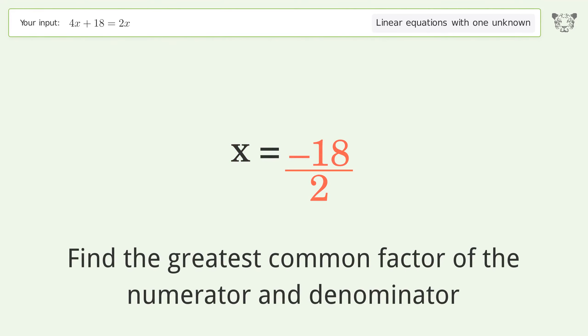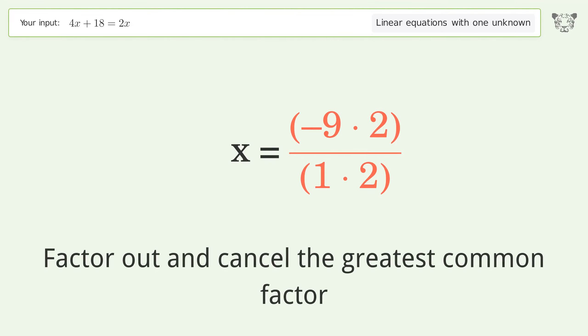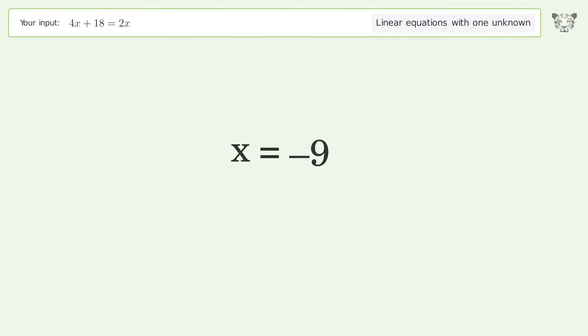Find the greatest common factor of the numerator and denominator. Factor out and cancel the greatest common factor. And so the final result is x equals negative 9.